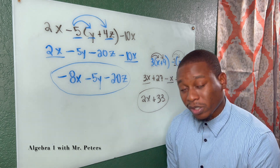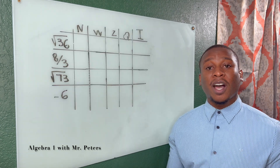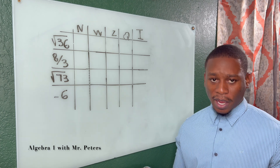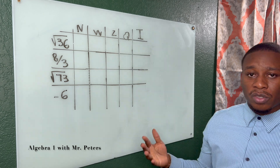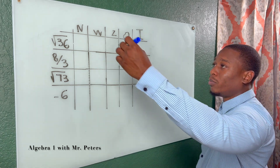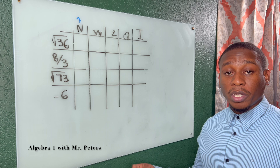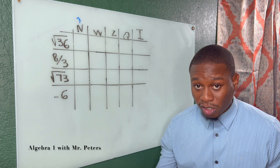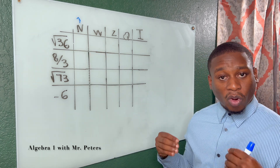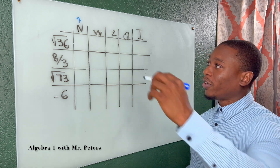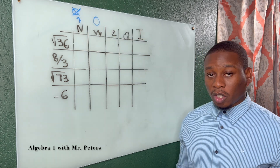The next concept is how to identify and classify real numbers. We're focusing on natural numbers, whole numbers, integers, rational, and irrational numbers. Natural numbers are all positive whole numbers such as 1, 2, 3, 4, and 5 — no fractions or decimals. Whole numbers are the same except they include 0; natural numbers do not include 0.